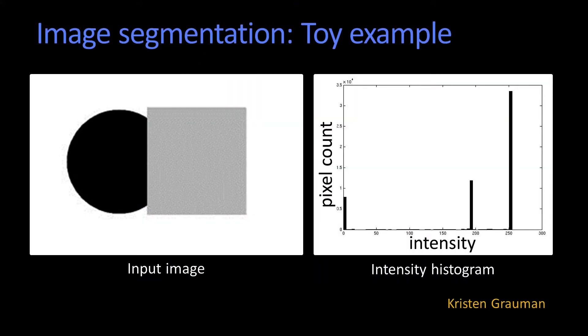So here's our toy example problem. Here we have an image on the left, and you can see that there are not that many gray levels present. In fact, there's a histogram of them on the right.